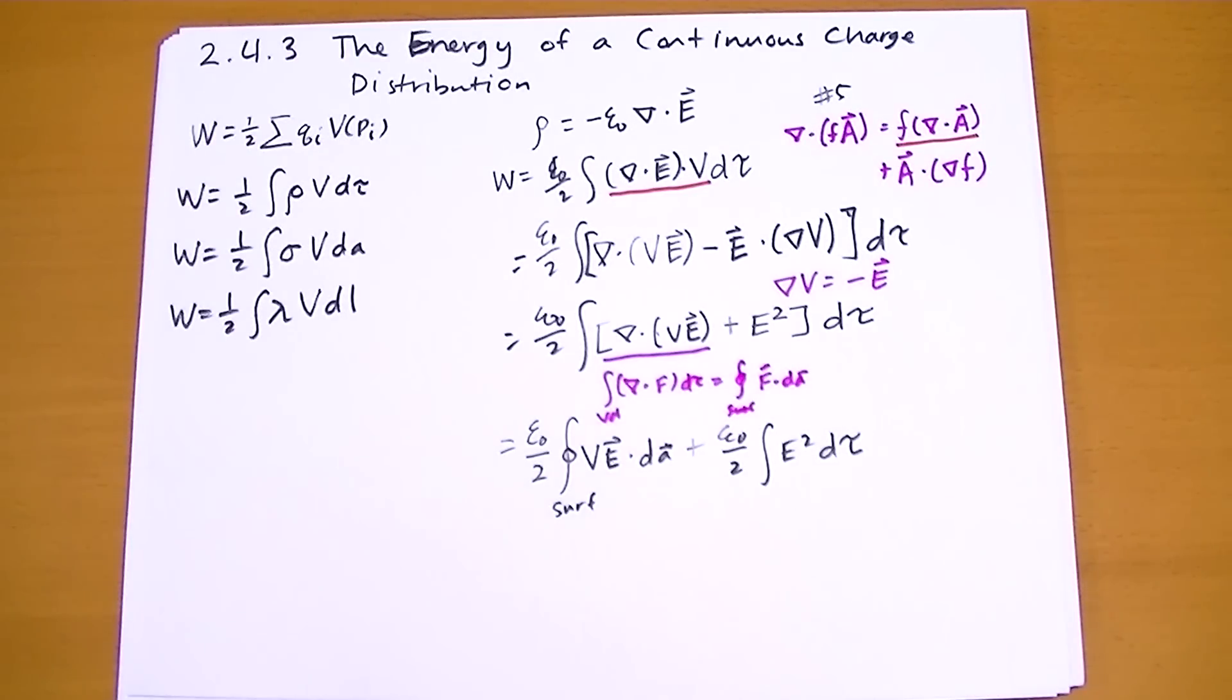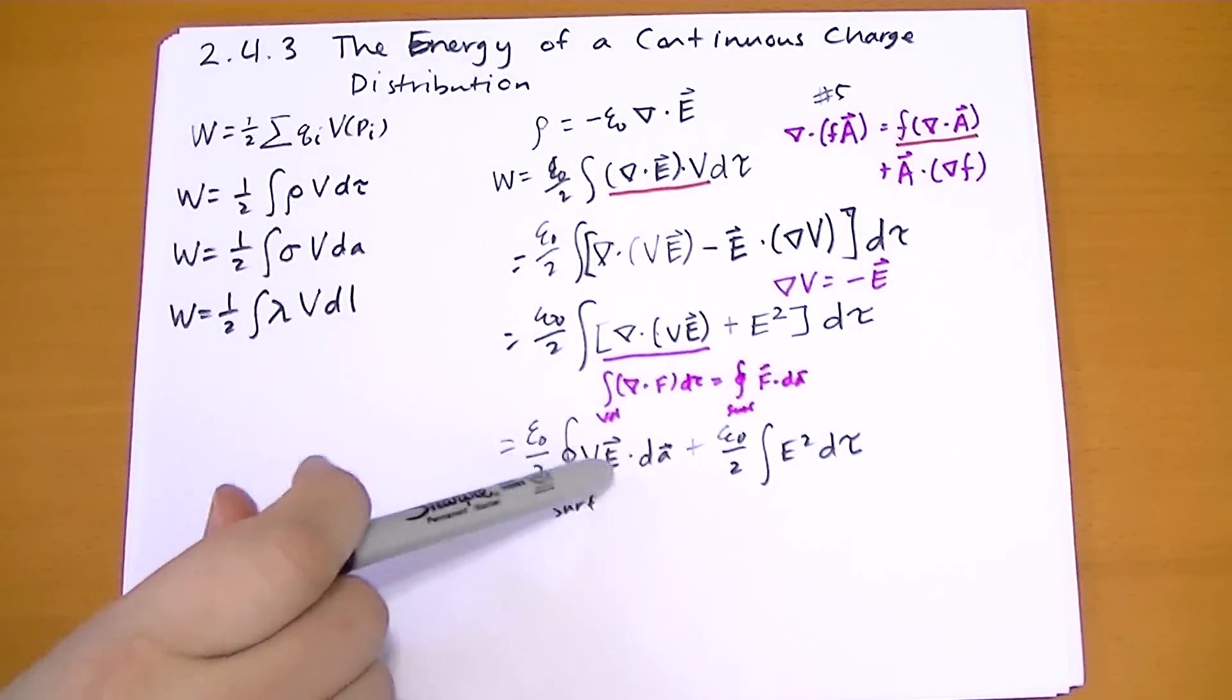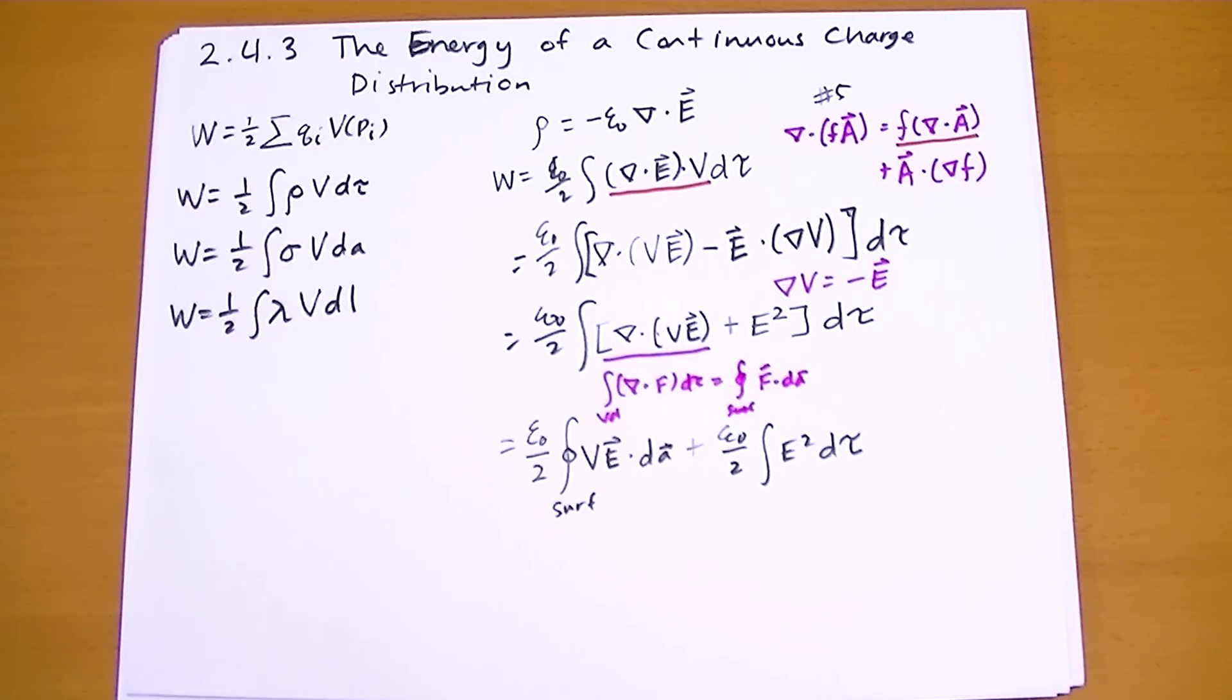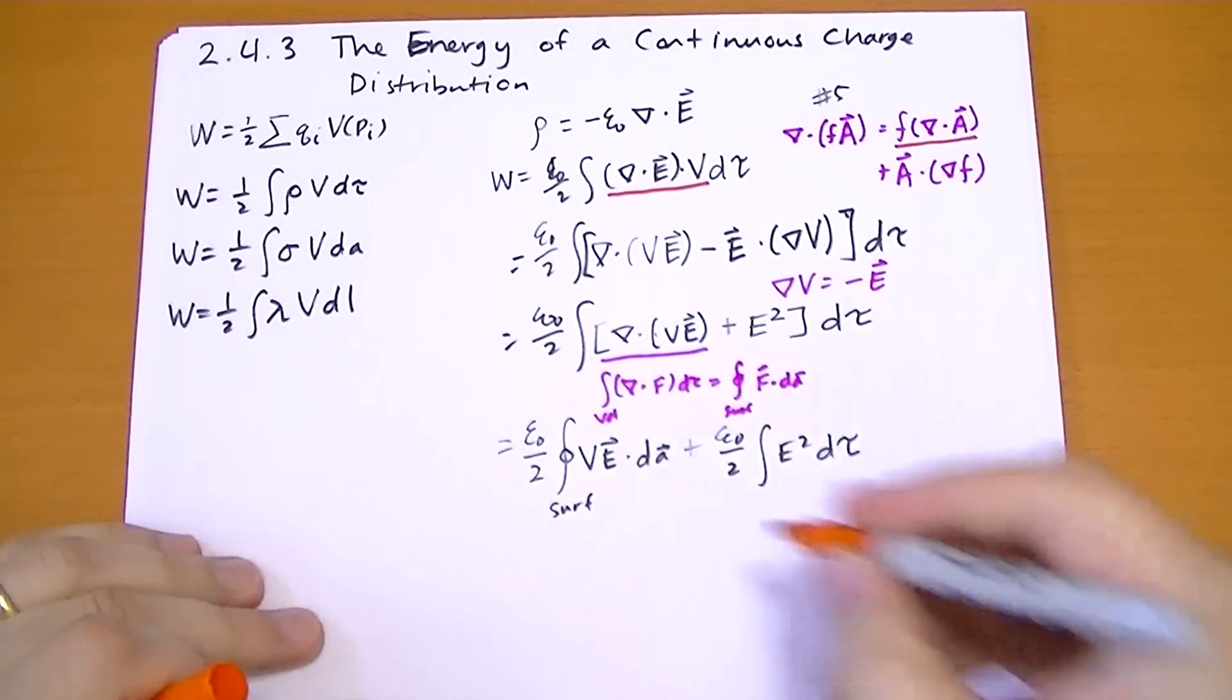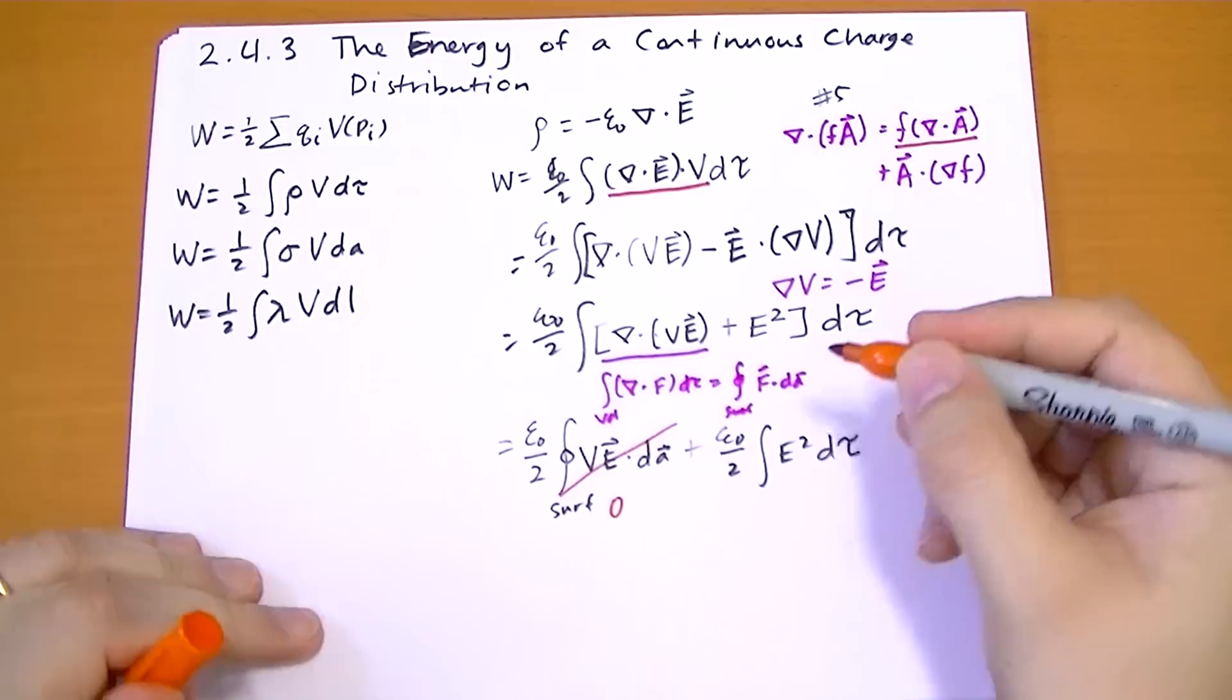Well, if we use a very large volume, then the electric field at infinity, and indeed the potential at infinity, should be zero. Right? So we can actually say, for very large volumes, that's zero.